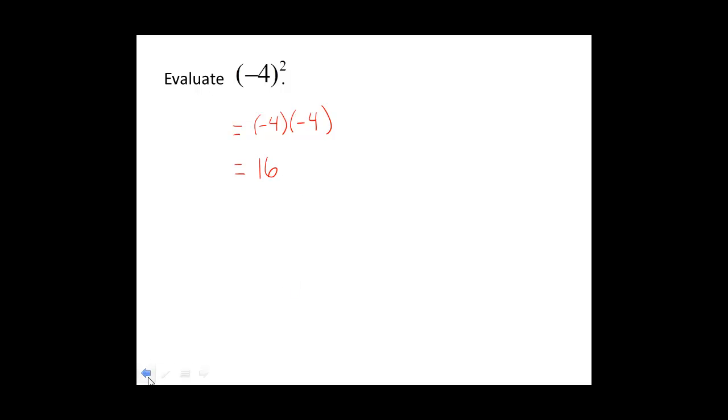Notice the difference between this problem and the problem before it. Notice where the negative sign is. In this problem, the negative is inside parentheses and outside of the parentheses has the power. This says to square what is inside of the parentheses. So we multiply what's inside by itself.